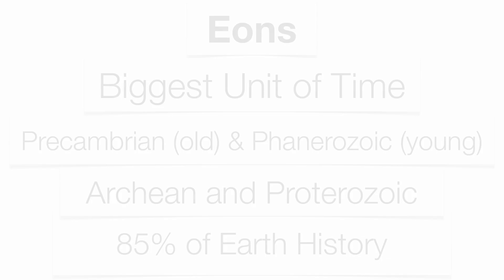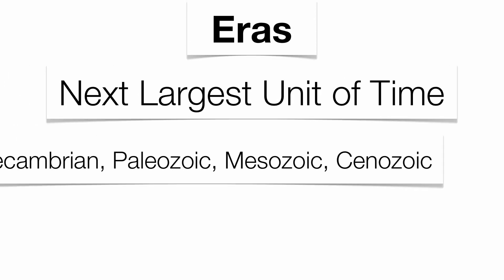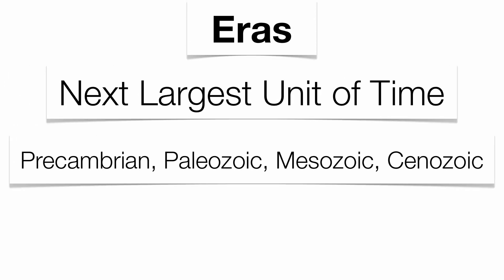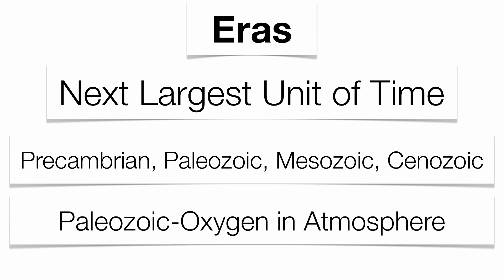Eons are broken up into eras, the second largest unit of time. You have four of them: the Precambrian, Paleozoic, Mesozoic, and Cenozoic. There's too much to cover fully in this podcast, but the Paleozoic is important because that's when oxygen really built up in the atmosphere.